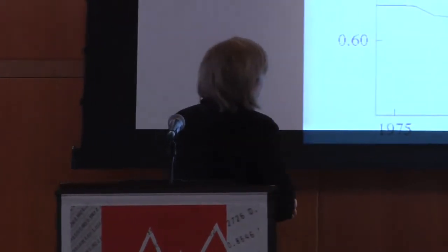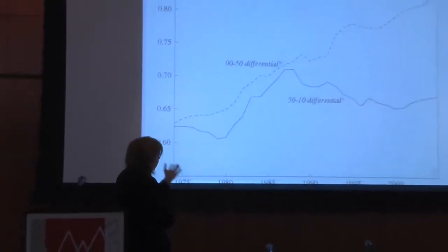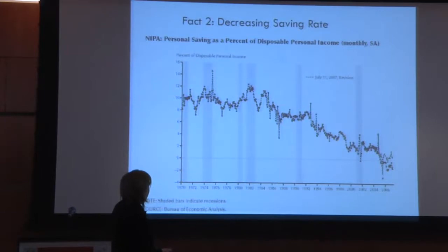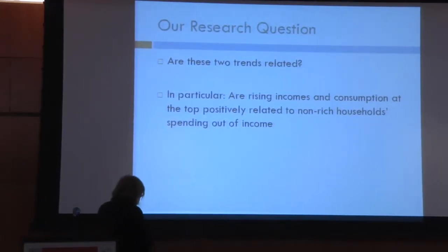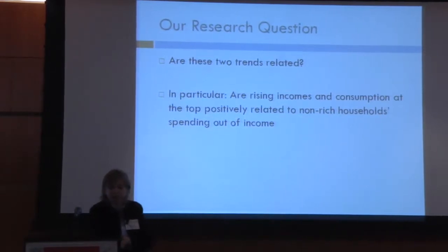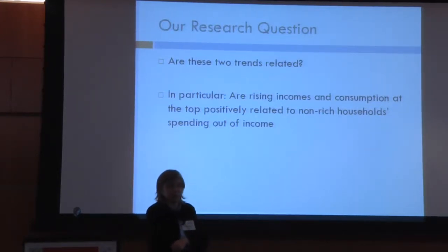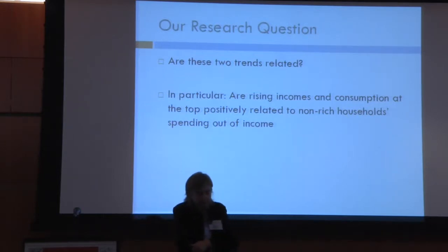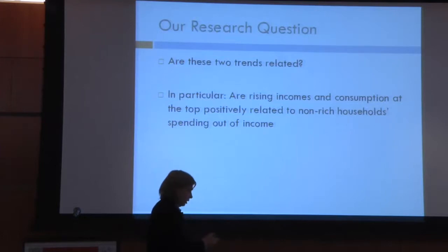So this paper wants to offer an explanation to partially understand two facts: rising income inequality over the last three decades, and the decreasing savings rate that Chris showed us previously. This paper is about whether these trends are related through consumption. The story we're going after is whether rising incomes and consumption at the top are positively related to non-rich household spending out of income. I'm going to use the word 'rich' to mean high income, and 'non-rich' to mean low income, just to keep the terminology easier. We're asking whether we can see a causal relationship between consumption patterns at the top and consumption patterns in the middle.